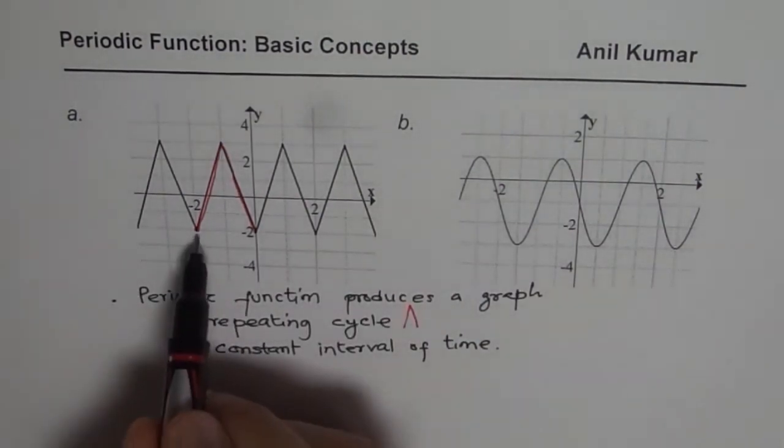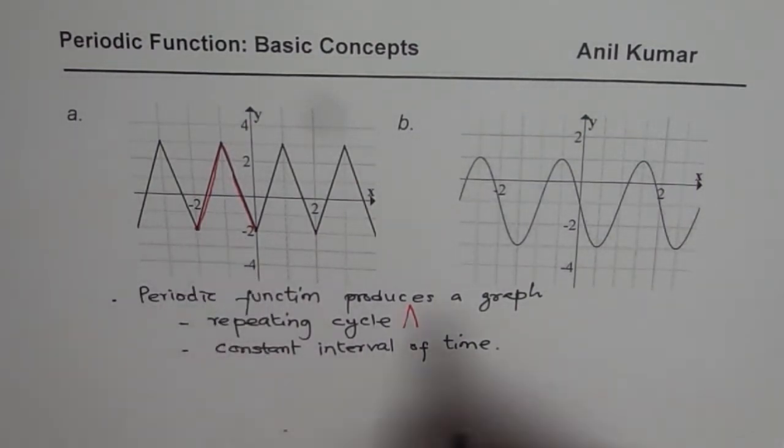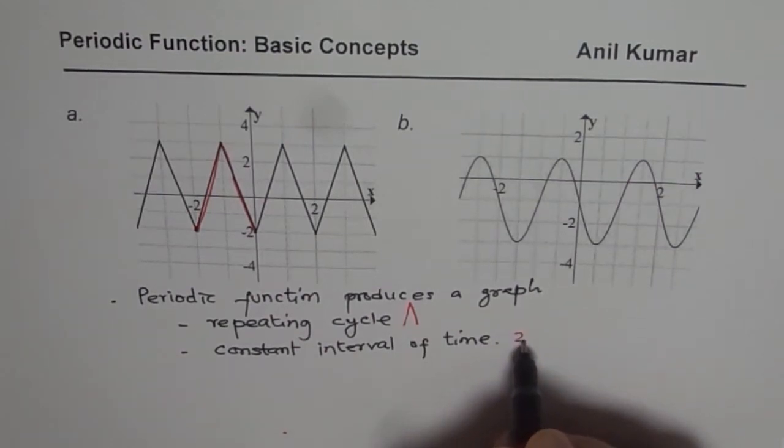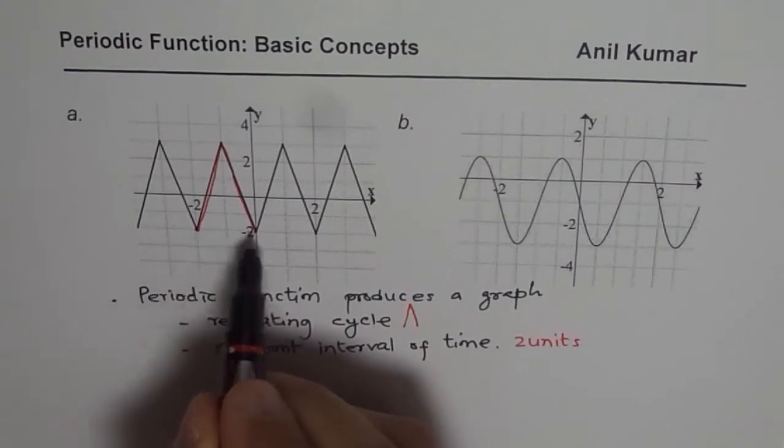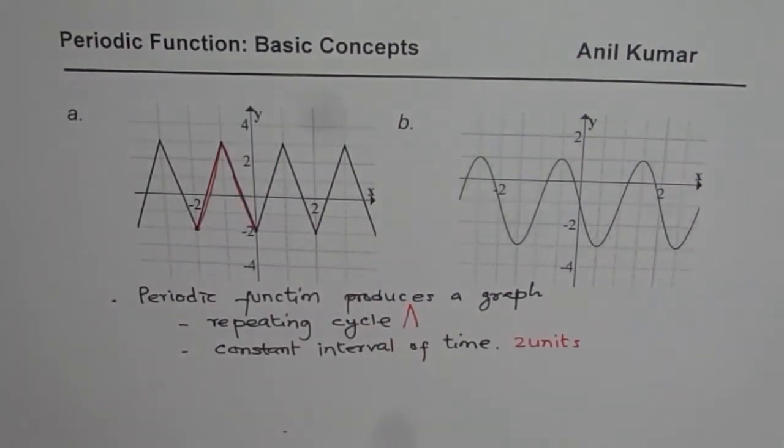And it repeats after regular interval. And that interval seems to be two units. So after every two units, our cycle is repeating for the first example. So that is why this particular function is a periodic function.